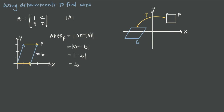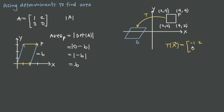That's helpful because it's often easy to find the area of the original figure and you already know the transformation. You don't need extra work to figure out more about G. For example, say we start with a square F in the first quadrant with corners at (2,2), (4,2), (4,4), and (2,4). The transformation T is expressed as the matrix with entries negative 1, 2, 0, 1.